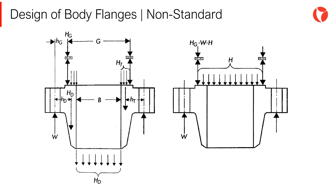The total hydrostatic force is applied at the center of the gasket and tends to part the joint (H in the picture). This hydrostatic force is counteracted by bolt preload forces and tightening torques (W in the picture). As a result of these forces, bending moments are generated in the hub of the flange — in other words, induced bending stresses — which need to be kept below the allowable.